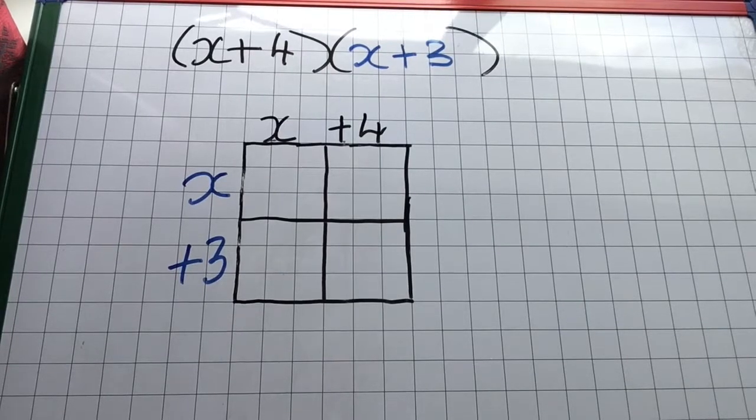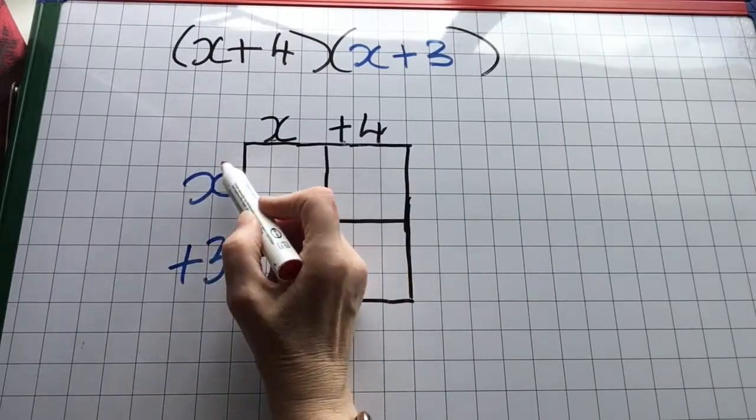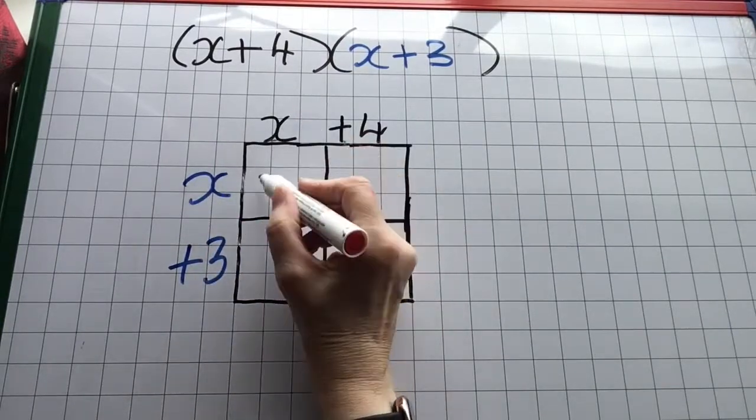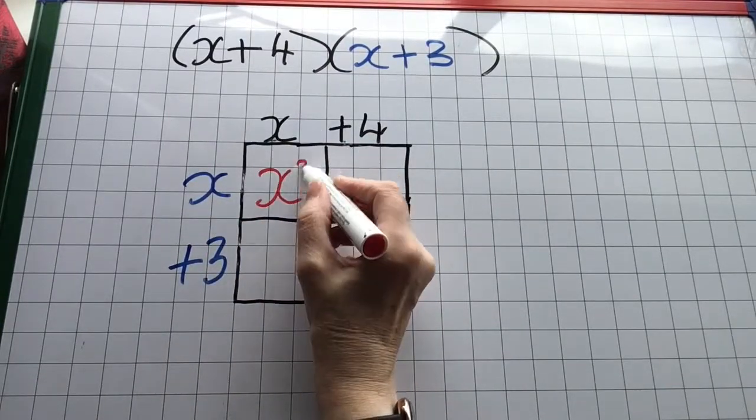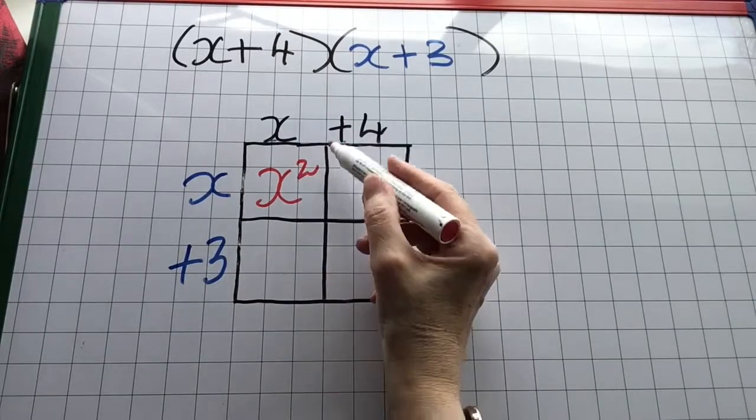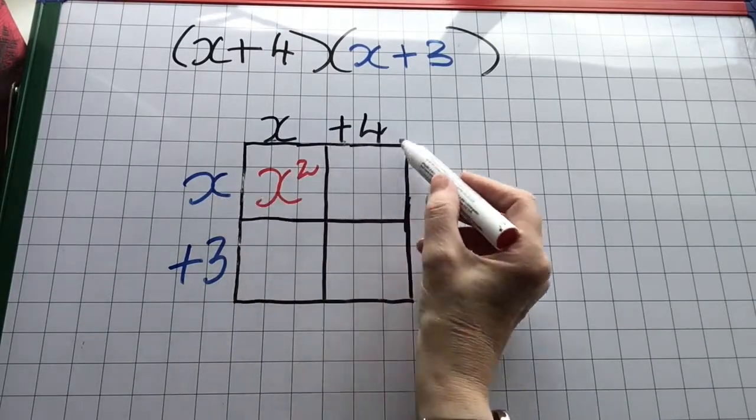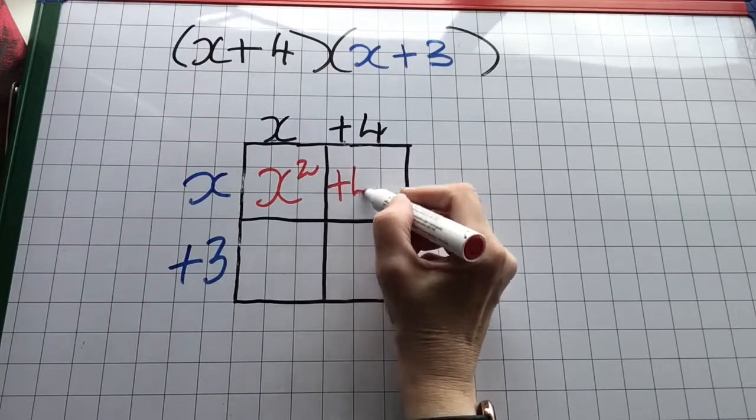Now my next job is going to be to find the area of each rectangle. An area is length by breadth so x by x is x squared. Length of x, width of 4 is 4x.